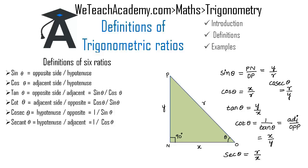That is hypotenuse by adjacent side. This was a basic introduction on the definitions of trigonometric ratios. Hope you understood the concept. Do like and subscribe to vteach academy.com. Thanks for watching, have a nice day.